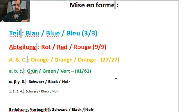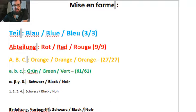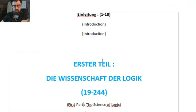Here I show the aesthetic aspect. There are three Teile in blue — German, English, French. Nine Abteilungen in red. And the capital ABC, which one might call subsections or subparts or distinct divisions, in orange, then green, etc. Here in the brackets are the various paragraphs.